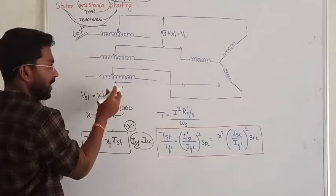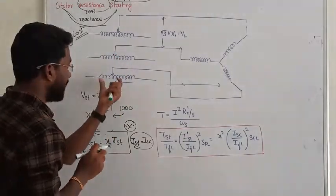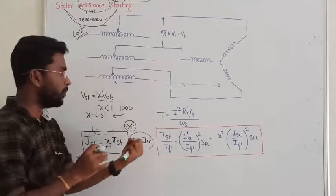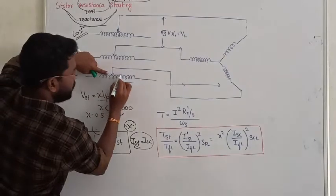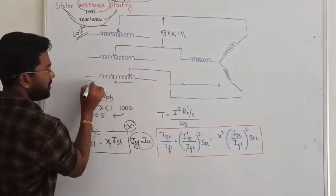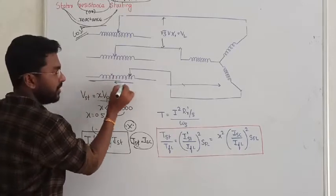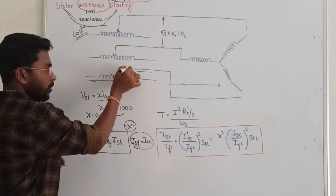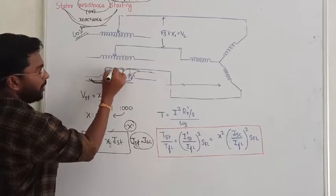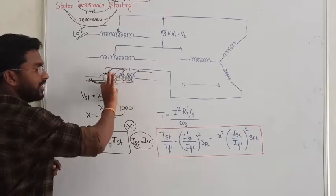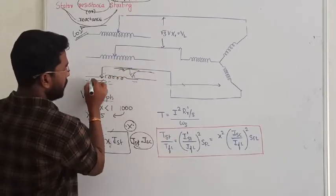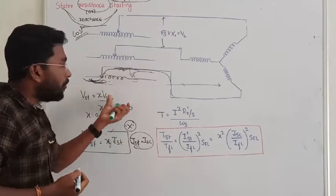By controlling the starting voltage, we can also control the starting current. We adjust the reactance value to control how much current flows. As we increase or decrease the reactance value, the current value changes accordingly. That is how we reduce the current value and bring the machine up to full load.